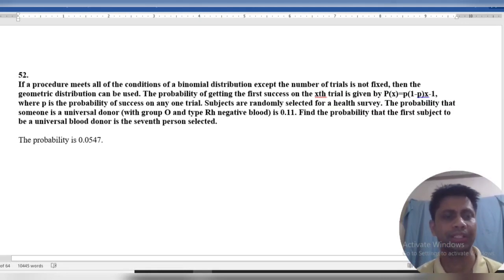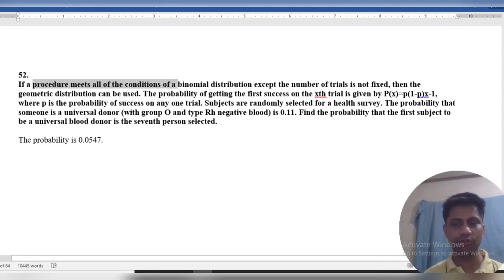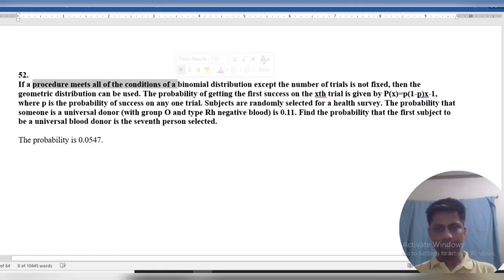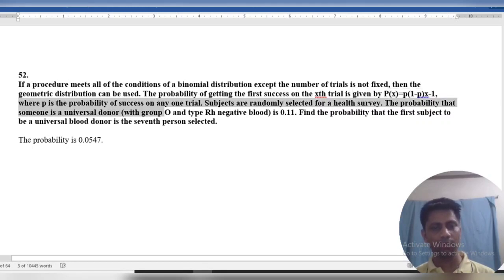Our question number is 52. If a procedure meets all of the conditions of a binomial distribution except the number of trials is not fixed, then geometric distribution can be used. The probability of getting the first success on the X trial is given by this formula, where P is the probability of success in one trial.